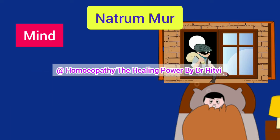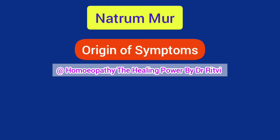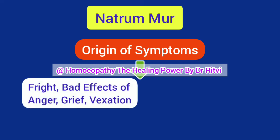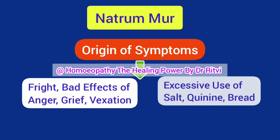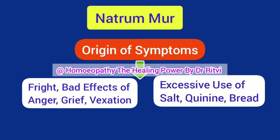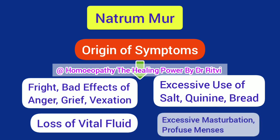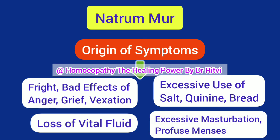This is the mind of Natrum Mur patient — the most important part for making a prescription and for students writing the mind of Natrum Mur in examinations. Symptoms in Natrum Mur are produced due to fright, bad effects of anger, grief, vexation, or even excessive use of salt. Excessive use of bread and quinine also produces symptoms. Loss of vital fluids, excessive masturbation, and profuse menses also produce symptoms in Natrum Mur.